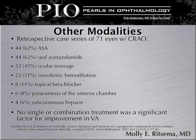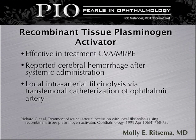Other modalities for the treatment of CRAO: a retrospective case series of 71 eyes with CRAO found that 44 had aspirin treatment. There was no single or combination treatment found to be a significant factor in the improvement of visual acuity. Recombinant tissue plasminogen activator was also used; it was found to be effective in treatment of CVA, MI, and pulmonary embolus, but reported cerebral hemorrhage after systemic administration.